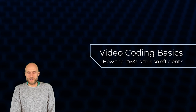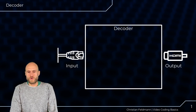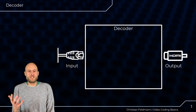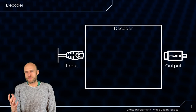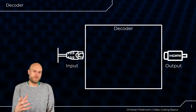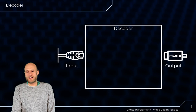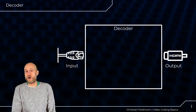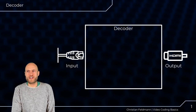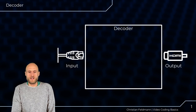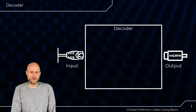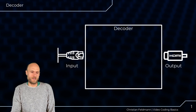Let's start with a basic encoder and decoder workflow, looking at the decoder first. A decoder is basically a black box: on the left there's an input — a raw bitstream coming in — and on the right there's an output, in this case HDMI, so raw frames you can send to a display. There are no real settings you can change; it either works or it doesn't.